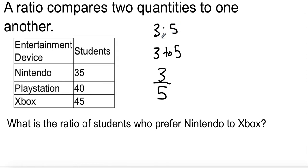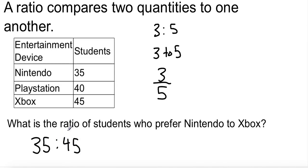Using these ratios, I'm going to answer the following questions using this table. The first question asks: what is the ratio of students who prefer Nintendo to Xbox? I can see that 35 students prefer Nintendo and 45 prefer Xbox, so I just need to write 35 to 45. I can also write it as 35:45 or using the word 'to'. We'll save the fraction form for a little bit later.